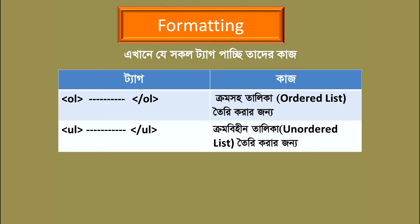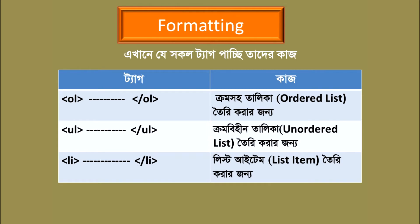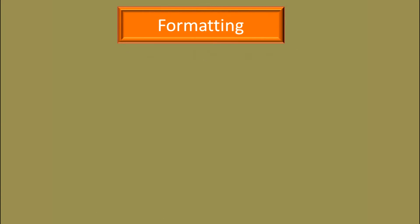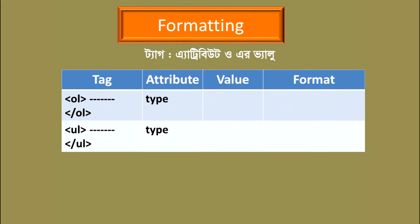The list has steps on it. The list items are tagged with the OL tag. The attribute is typed in the ordered list.